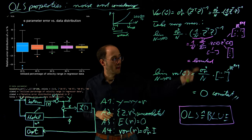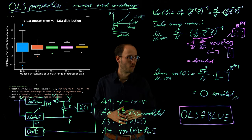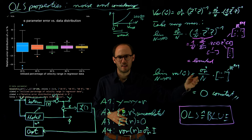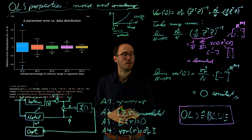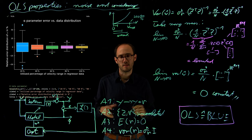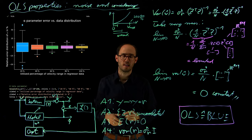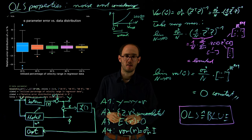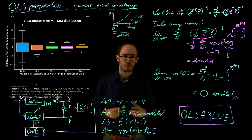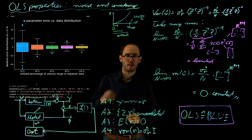Therefore, this investigation and the theoretical calculations highlight that two things must come together for successful identification: first, we should have enough data — the more the better, provided the assumptions hold; and second, we need to choose our data wisely, distributing samples across a broad and intelligent range rather than concentrating all measurements in a small area of the operating range. We will consider the data distribution question further in follow-up videos. With this video, we conclude the theoretical investigations on the ordinary least squares estimator — the best linear unbiased estimator under these assumptions. Thank you for listening and see you in the next video.